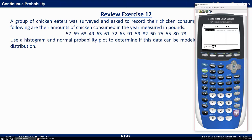So I'll just type it in like this: 57, 69, 63, 49, 63, 61, 72, 65, 91, 59, 82, 60, 75, 55, 80, and 73.